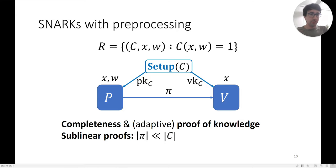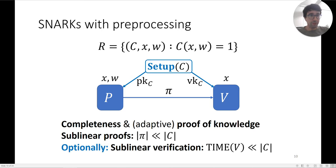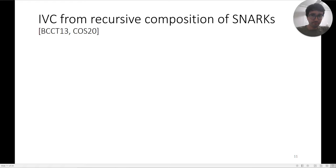Optionally, we can also ask for sublinear verification: the time of the verifier is much smaller than the size of the circuit. This is optional — there are SNARKs that fulfill it and interesting SNARKs that don't. We will later be interested in SNARKs that don't fulfill this condition. But for now, let's look at SNARKs that do and see how recursive composition is used to build IVC.